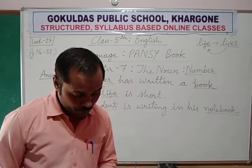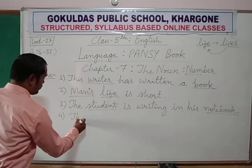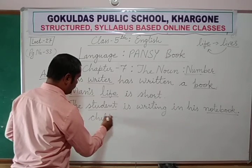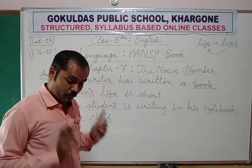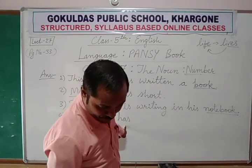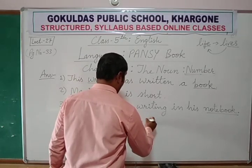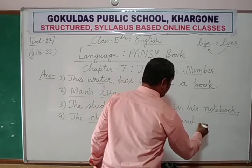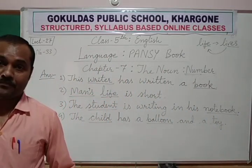Sentence 4: 'The children have balloons and toys.' 'Children' → 'child'; 'have' → 'has'; 'balloons' → 'a balloon'; 'toys' → 'a toy'. Correct answer: 'The child has a balloon and a toy.'